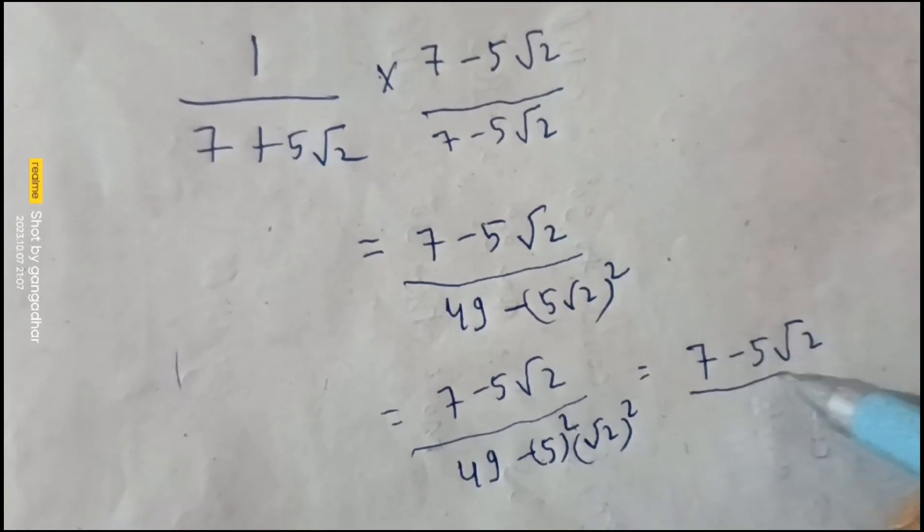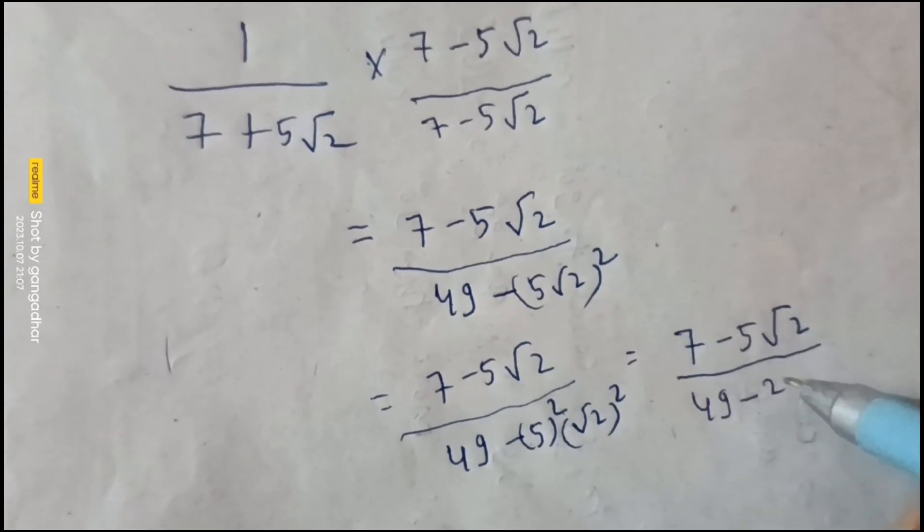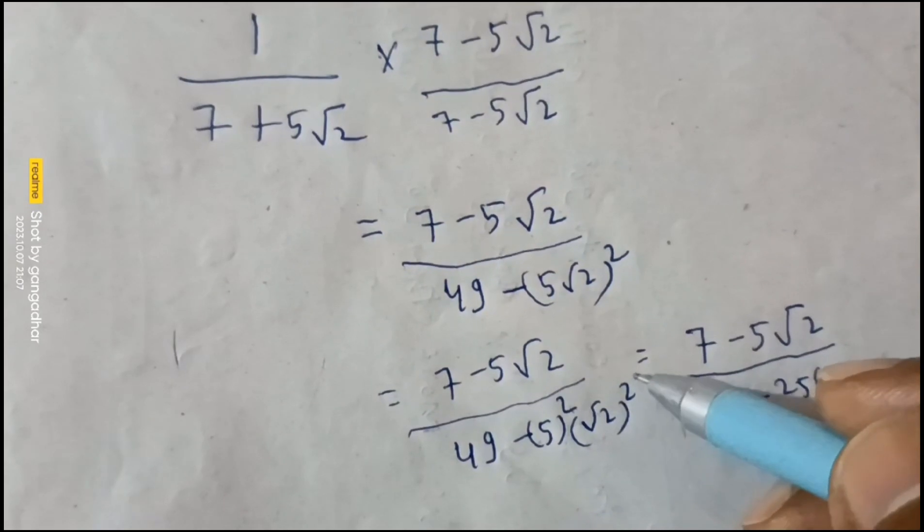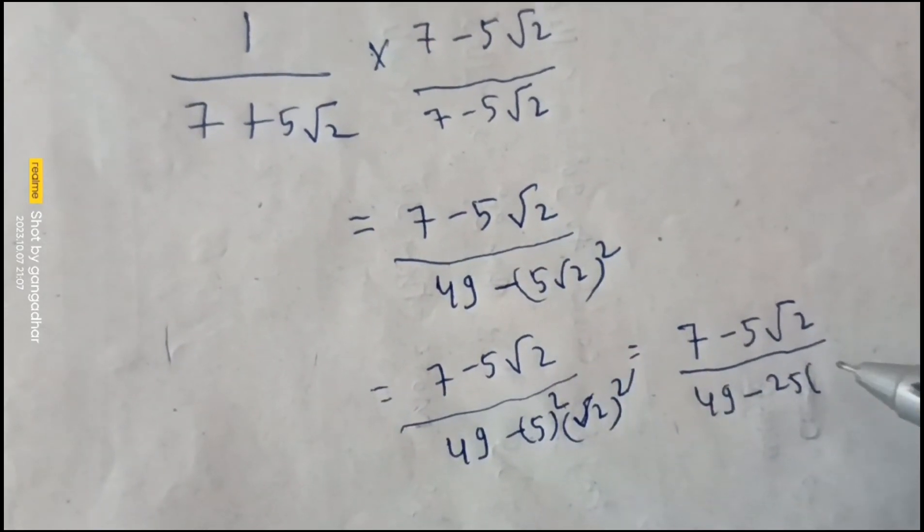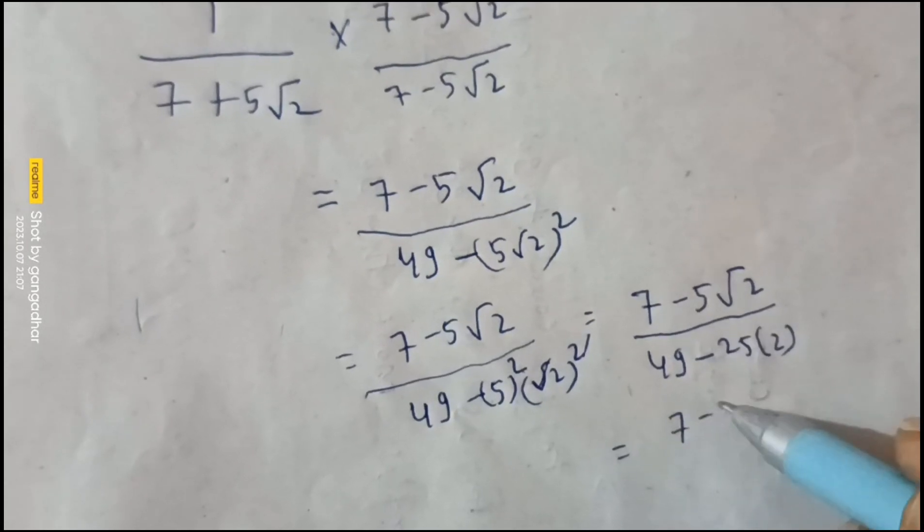Forty-nine minus pi squared means twenty-five. Root two whole square means two, and the roots cancel leaving two. Seven minus pi root two.